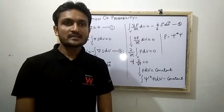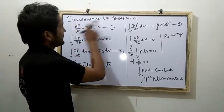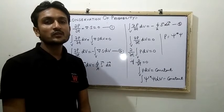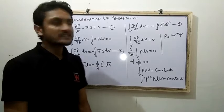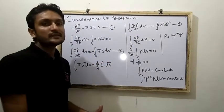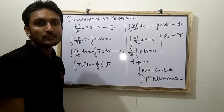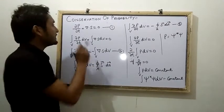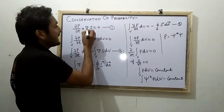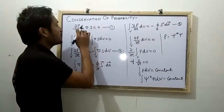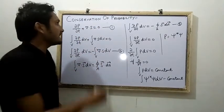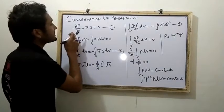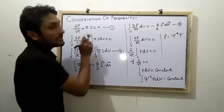We are going to discuss conservation of probability — how to calculate and how to understand it. Conservation of probability is calculated with the help of the equation of continuity: del p upon del t plus del dot S equals zero, where p is the probability and S is the current density of the wave function.